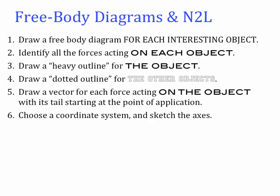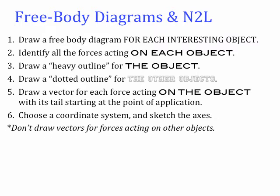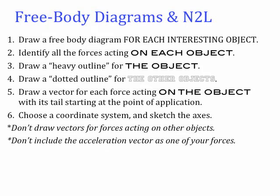Once you've drawn all the free body diagrams, you need to choose a coordinate system and sketch the axes. This will communicate to anyone looking at your free body diagram that you have chosen a particular coordinate system, and that you're going to use that coordinate system when you reduce this free body diagram to equations. You don't want to draw vectors for forces acting on other objects — just draw vectors for forces acting on the object of interest. You don't want to include acceleration or velocity vectors as a force, because they're not forces. Those are kinematical variables that describe motion. Remember that forces have sources, so indicate on each vector the source of the force.